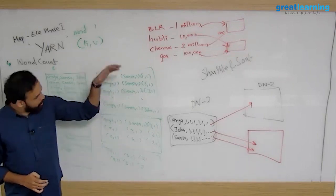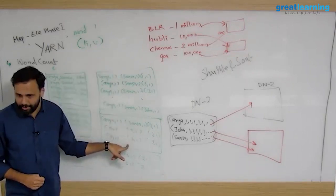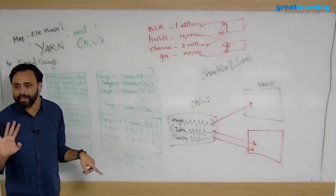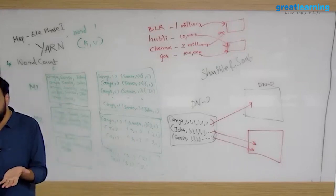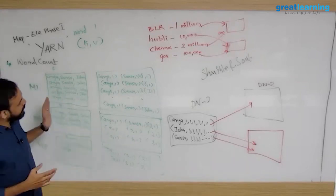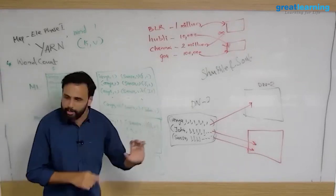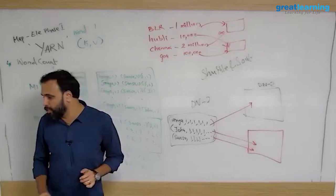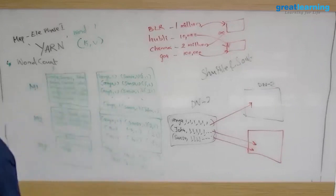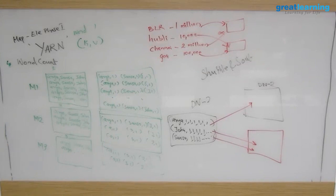Spark relies on a similar idea, but the key difference is that after the mapper reads data, MapReduce pushes it to hard disk. Spark keeps everything in memory — in RAM — so it can do everything in one shot and give you the final result. Spark is proven to be 10 to 100 times faster than MapReduce.